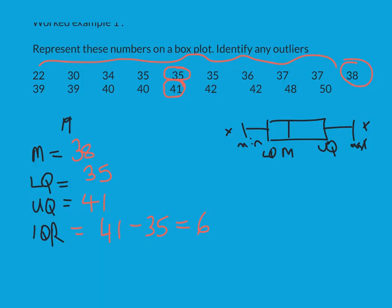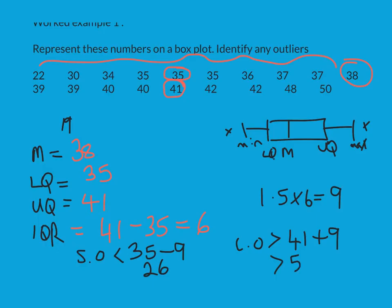I'm now going to check for any outliers before I move on. So I'm going to do 1.5 times 6, which is 9. Now my small outlier would be less than my lower quartile, 35, take away 9. And 35 take away 9 is 26. And my large outlier would be more than 41 add the 9, so more than 50.